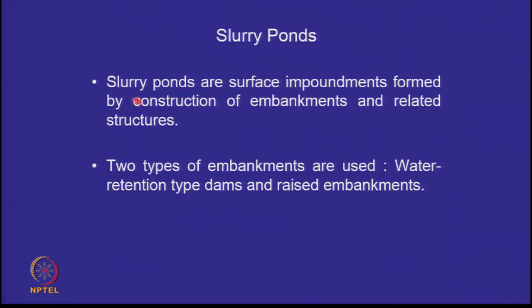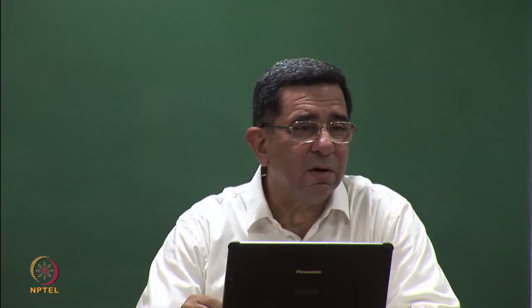To quickly recap: slurry ponds are surface impoundments formed by construction of embankments and related structures all around the area in which tailings or ash is to be disposed. Embankments can be water retention type dams or raised embankments. There is a tendency to think that because slurry is not water, the design will be different — but because it is lean slurry, with predominantly 10 times more water than solids, it is like designing a lake.